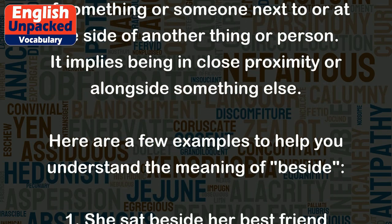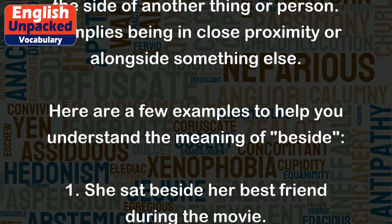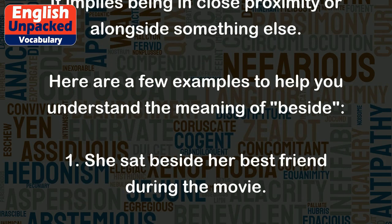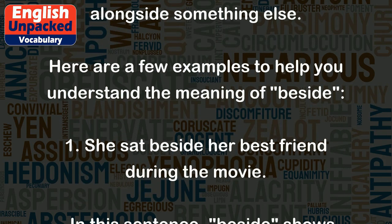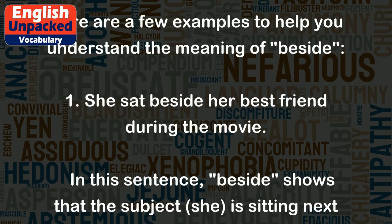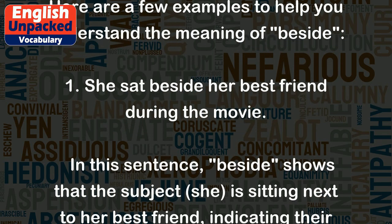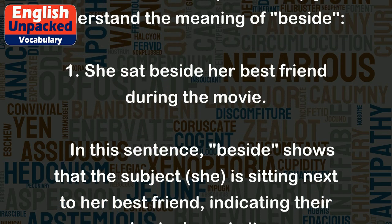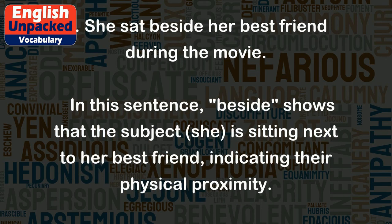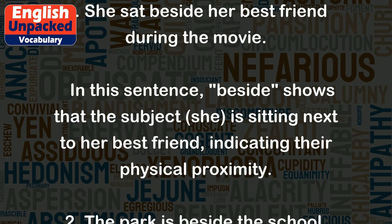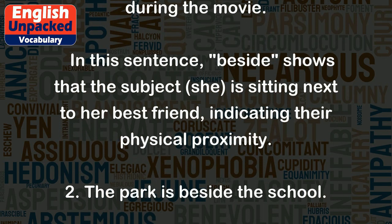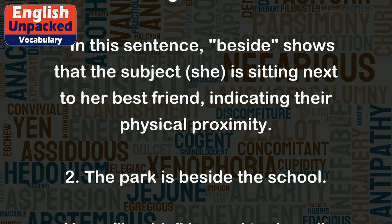Here are a few examples to help you understand the meaning of 'beside.' One: She sat beside her best friend during the movie. In this sentence, 'beside' shows that the subject, she, is sitting next to her best friend, indicating their physical proximity.